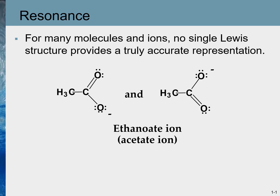For example, let's look at the structure of acetate ion. It can be represented in two ways. In both cases, we have a C–O double bond and a C–O single bond. When experimental studies were done to measure the bond length, it was expected that one bond should be smaller than the other, because double bonds are smaller than single bonds.